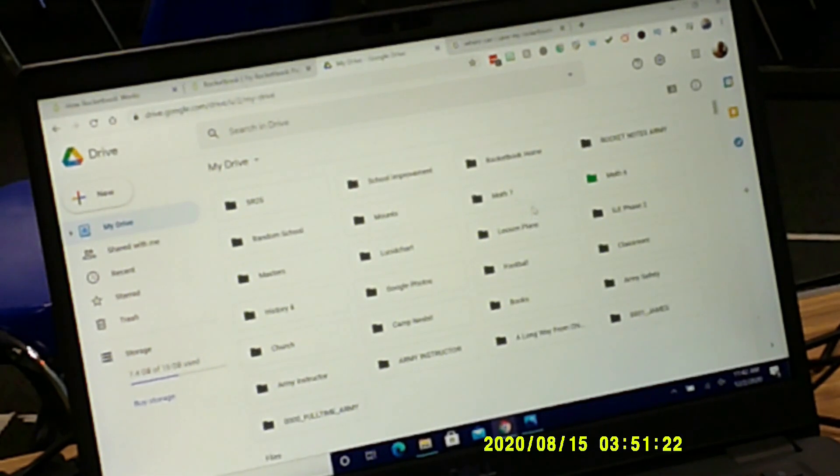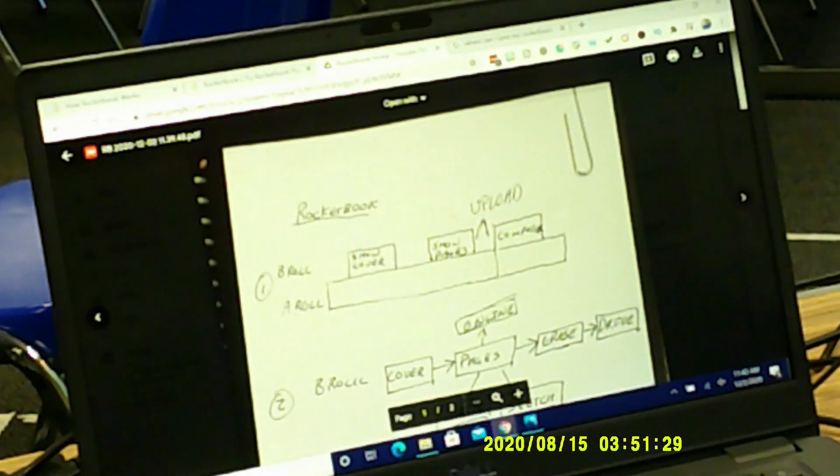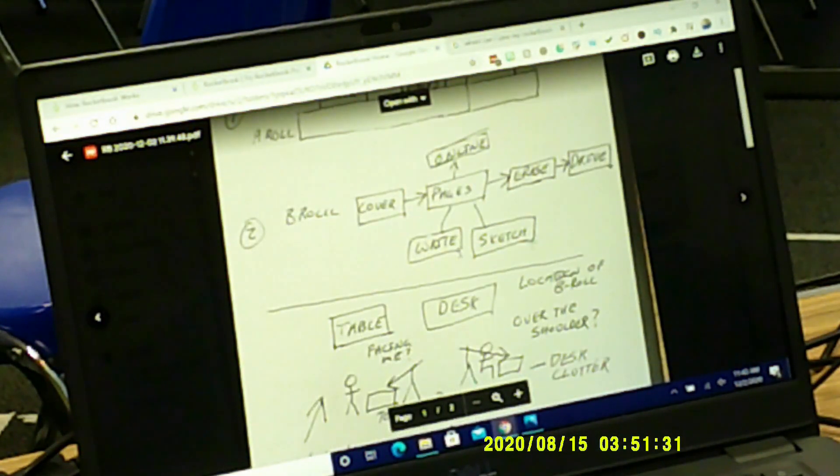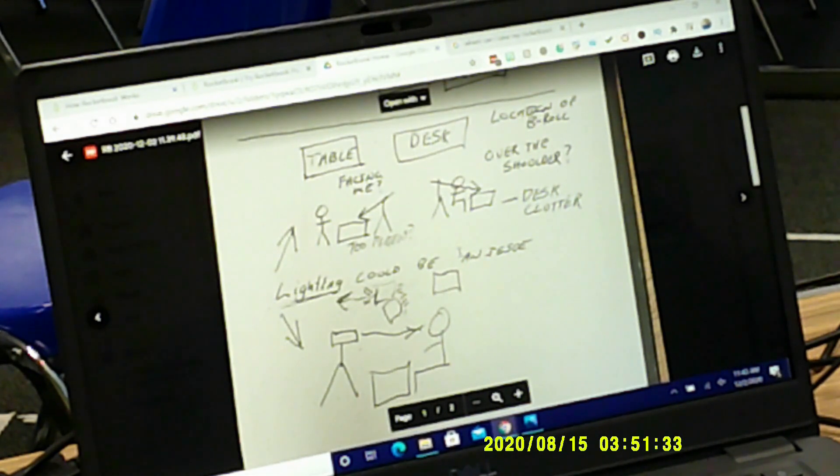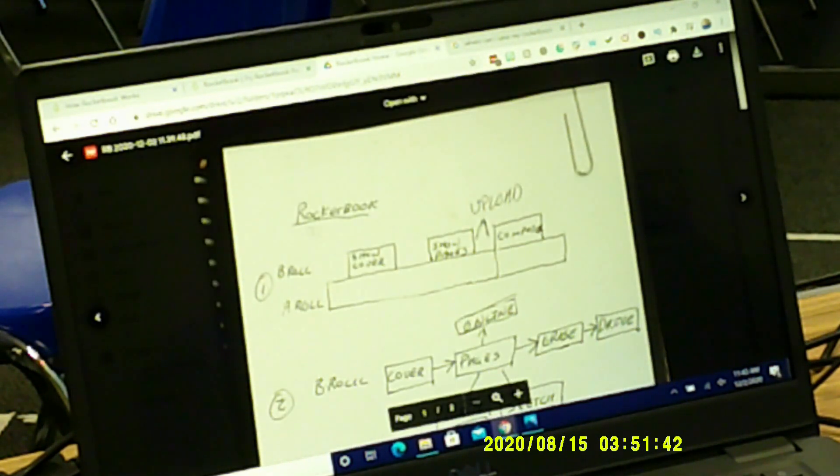Now we can see that scan. I am simply in my Google Drive. I'm going to open up Rocketbook home, and I can open it, and now it's simply a PDF in my computer. Now that it's a PDF, I can open it with a PDF editing software. I can email it. I can save it. I can basically do anything I can do with a regular PDF.